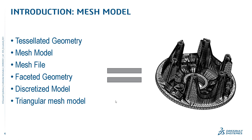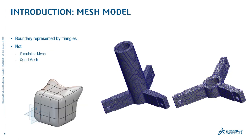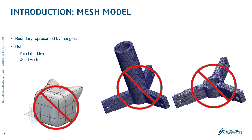This is very different from regular SOLIDWORKS geometry, where every point on the boundary representation of the surface of a model is known by an equation — accurate to 10 to the minus 8 meters. When talking about mesh models in this presentation, it's also important to note that we are not talking about simulation mesh models or quad mesh models.